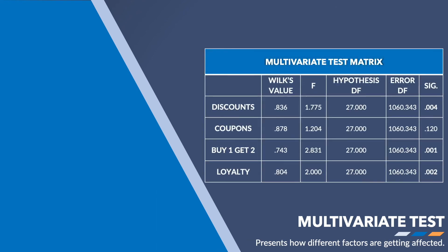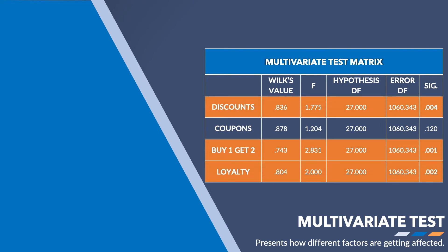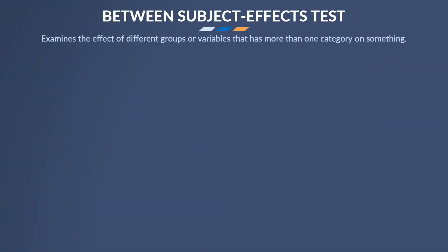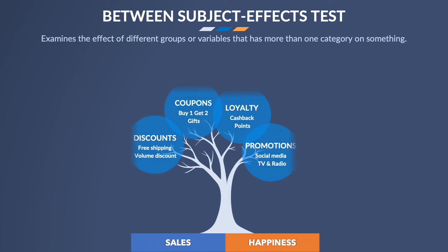This table is very similar to the Box test and Levene's test table, except that in this case the relationship for each independent variable is shown separately rather than for the dependent variables. Another difference is that here the significance value must be less than 0.05 to be considered an impact. Since the significance values for the discount, buy one get one free offer, and loyalty programs are less than 0.05, we can say that these activities affect the company's sales and customer satisfaction. The between-subjects effects test in multivariate analysis shows how groups consisting of multiple sub-elements affect two or more factors.